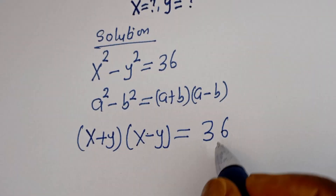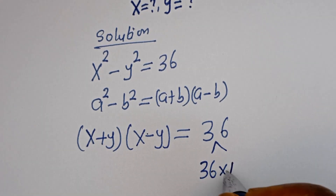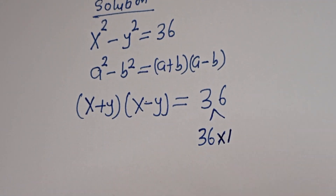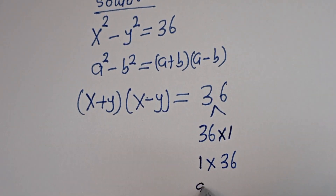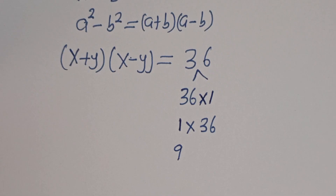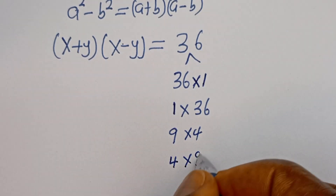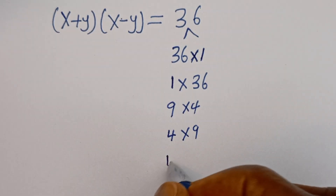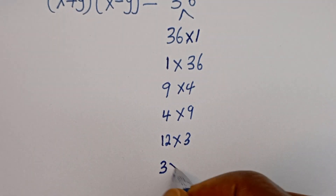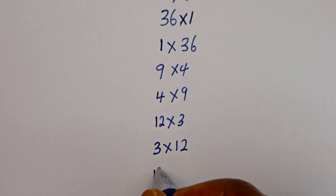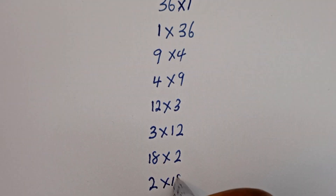Then 36 is a product of: 36 multiplied by 1, 1 multiplied by 36, 9 multiplied by 4, 4 multiplied by 9, 12 multiplied by 3, 3 multiplied by 12, 18 multiplied by 2, and 2 multiplied by 18.